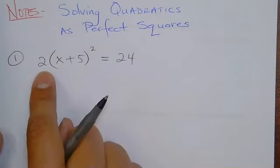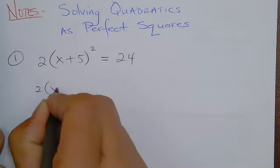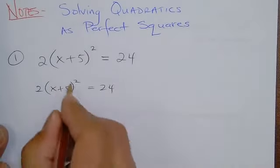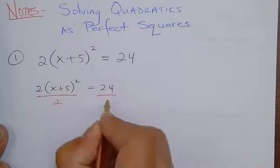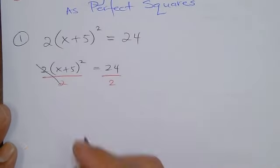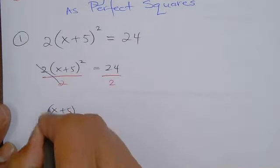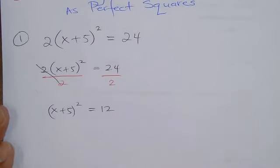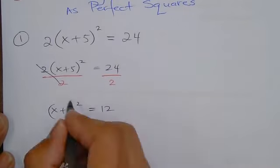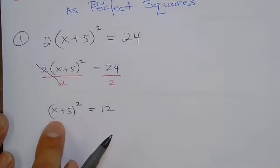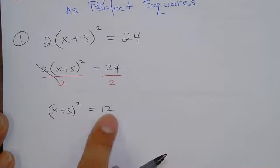We can't have this number here, so we've got to divide by two. We cannot have any number here — I just need this squared part alone. So you're going to divide everything, and those will cancel. 24 divided by 2 is 12. So now you have this: the completed square here alone and then a number over here. This is what you want, where you want it.